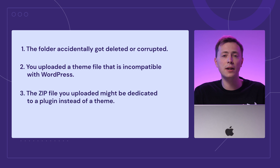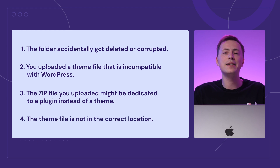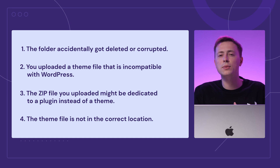The third reason: the zip file you uploaded might be dedicated to a plugin instead of a theme. And the fourth reason: the theme file is not in the correct location. If you downloaded the file from an online marketplace, you could have also downloaded the theme's licenses or other documents along with the theme file. In other words, you need to extract the downloaded zip file to locate the theme file and upload it to WordPress.